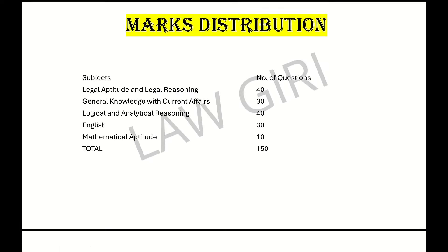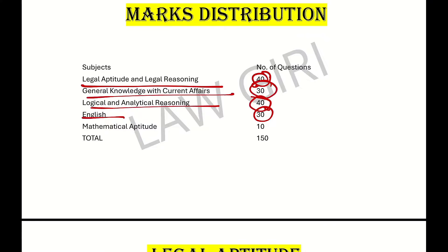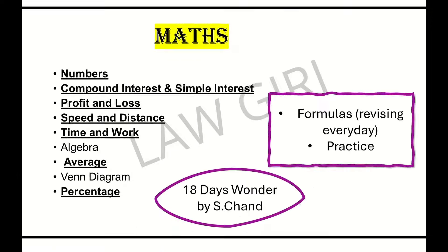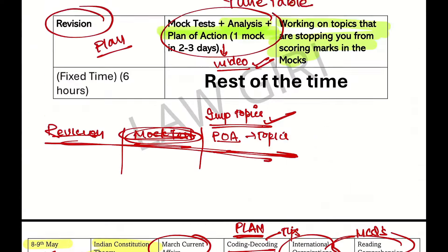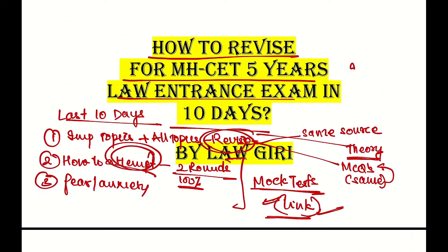If you look at the marks distribution: Legal is 40 marks, English is 30 marks, Logical is 40 marks, General Knowledge is 30 marks. Maths, if it comes, do it at this stage; otherwise don't worry. So this is what you need to do for your revision. In the last 10 days, your revision should be complete and you should attempt mock tests. For fear and anxiety, listen to affirmations which are available free of cost on logari.in. Comment and ask if any topic is weak for you and how to improve it — such comments help us understand that you are analyzing the paper.